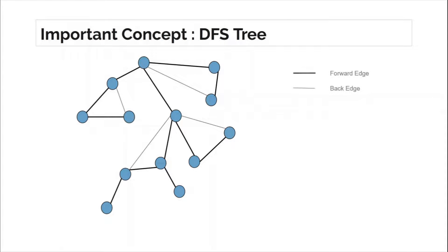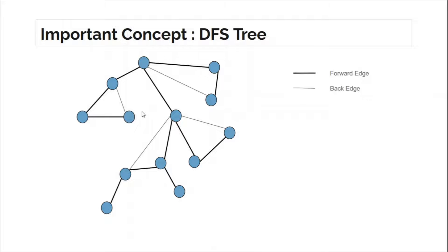We only consider two different types of edges: forward edges and back edges. Forward edges are those edges which get traversed while making recursive DFS calls — all the black edges. The ones which did not get traversed while making DFS calls we will call back edges. You can observe that each back edge, if you put it back into the tree, creates a cycle.